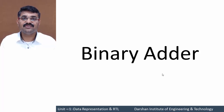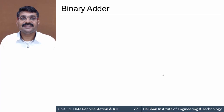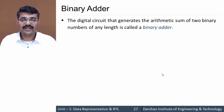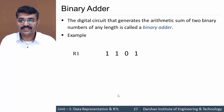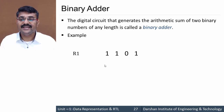In this session we'll discuss binary adder. Binary adder is an arithmetic micro-operation which performs the addition of two binary numbers stored in registers of any length. For example, register R1 contains 4 bits: 1 1 0 1, and register R2 contains 4 bits: 0 1 1 1.